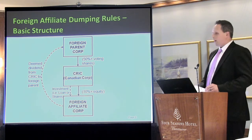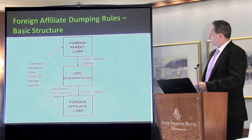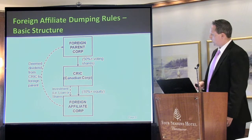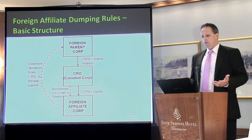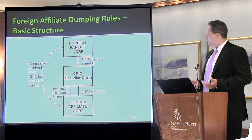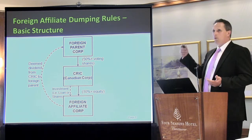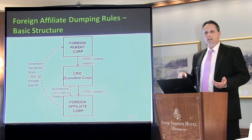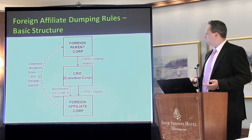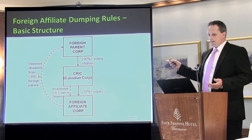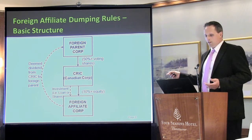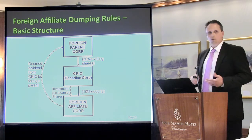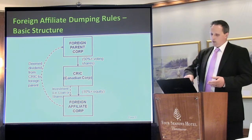The structure these rules are intended to catch is: a foreign parent, a Canadian resident corporation, and a foreign affiliate below it. The investment into that foreign affiliate can be in the form of a loan or shares. The key is that the foreign parent is actually controlling the Canadian company. The nuts and bolts of the provision is that where a foreign company invests money into Canada and Canada in turn invests that money into a foreign affiliate, the amount of the investment going down to the foreign affiliate is deemed to be a dividend paid by the Canadian company to its foreign parent.